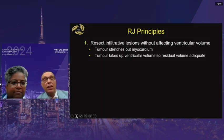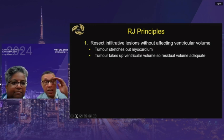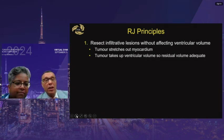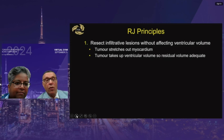The key principle is that infiltrative lesions of the heart — infiltrative lesions into the walls — can be resected without affecting ventricular volume because the tumor stretches out the myocardium. As the tumor grows into the chamber, it displaces blood. When we remove that tumor, there's enough residual volume and wall left for a functional heart. We're essentially changing tumor volume for blood volume — those are two very important principles.